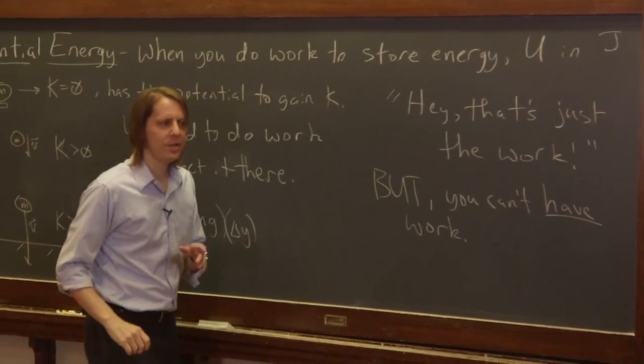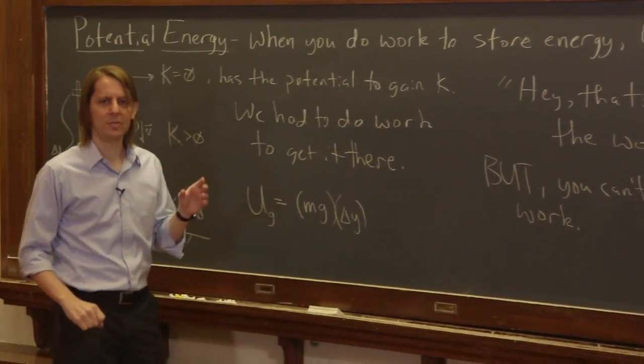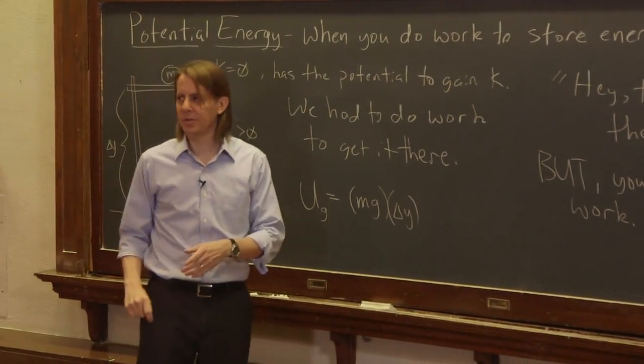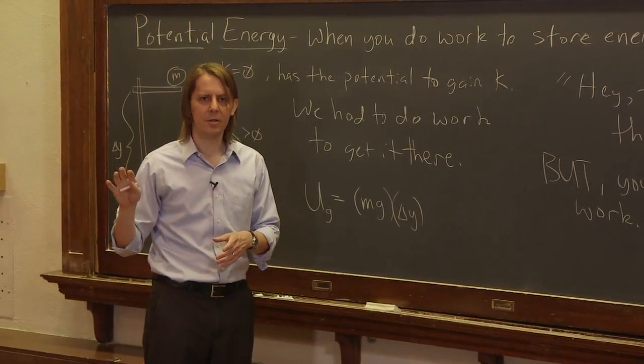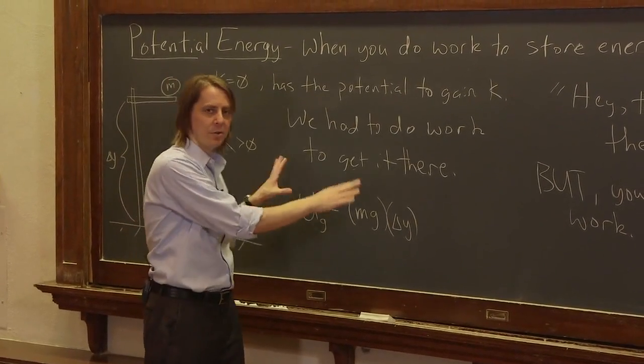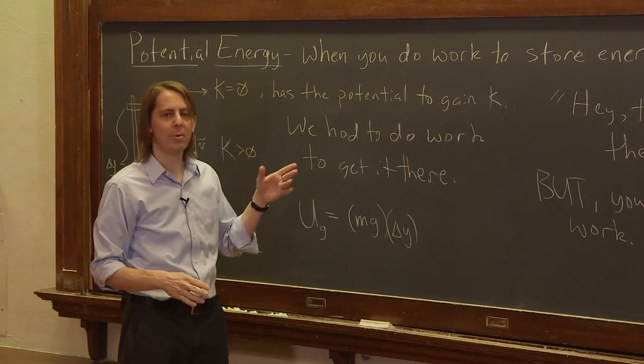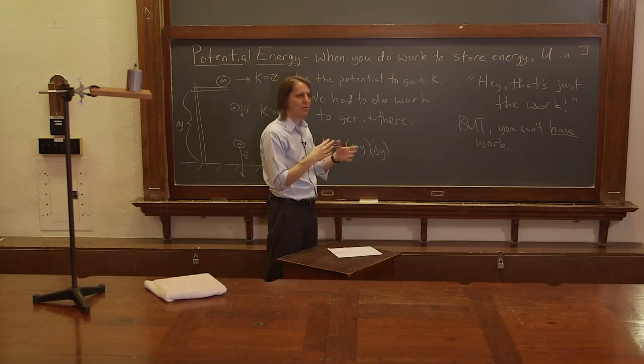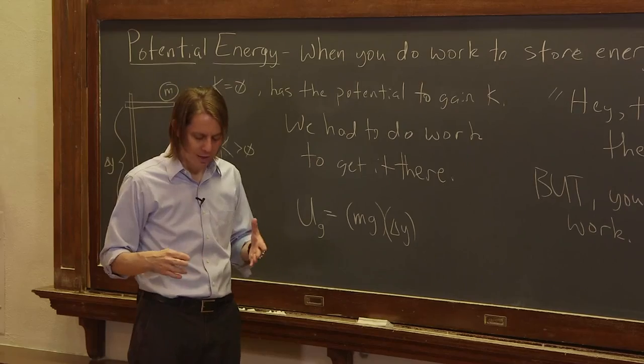Okay? Kinetic energy is a property of an object based on its velocity. Potential energy is a property of an object based on its position. If there's a mechanism to have potential energy, sometimes there isn't. Those are properties of an object. Work is really just the exchange of energy. You can't really have work. Work is something that happens.